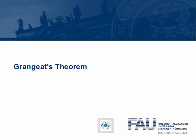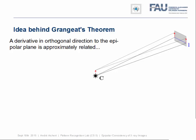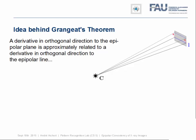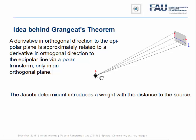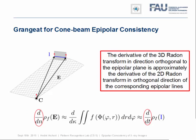Fortunately, there exists a theorem from CT reconstruction which addresses exactly this situation. The idea behind Grangeat's theorem is that we can make the same mistake twice, only in different directions. Consider, we took a derivative in a direction orthogonal to the epipolar plane. It would be related to a derivative in orthogonal direction to the epipolar line, again, by a polar transform, only this case in an orthogonal plane. The Jacobi determinant then introduces a weight with a distance to the source, as before. However, this time, because we are taking a derivative instead of an integral, 1 over the distance to the source, in effect cancelling out the weighting that we got from integrating in the other direction. This brings us to the theorem itself, which states, the derivative of the 3D Radon transform in direction orthogonal to the epipolar plane is approximately related to the derivative of the 2D Radon transform in orthogonal direction of the corresponding epipolar lines.